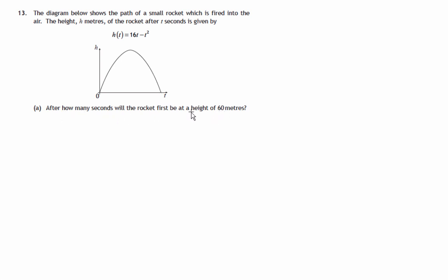The question asks: after how many seconds will the rocket first be at a height of 60 meters? So presumably somewhere there's a height of 60 meters, see it's around there, actually equals 60. So it gains height and passes through a height of 60 meters to a maximum height, and then as it falls down it passes through that height of 60 meters again. So we would expect two values for the time when it reaches a height of 60 meters.